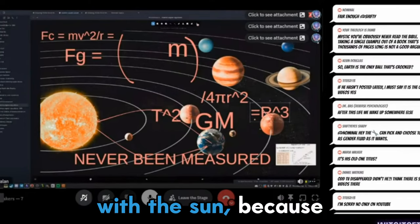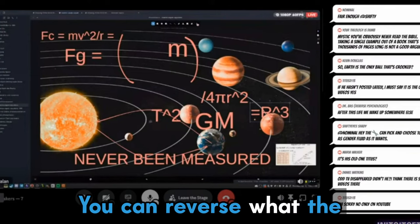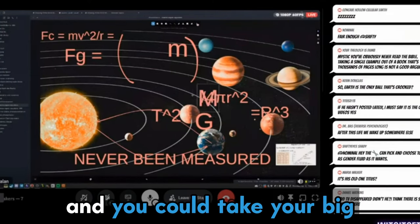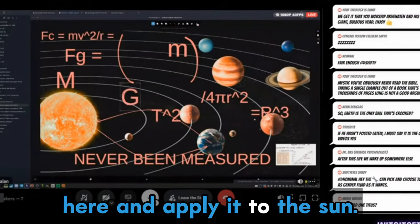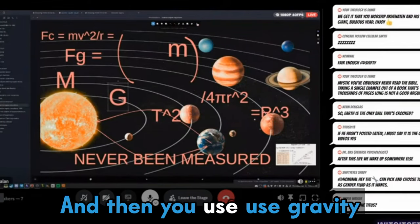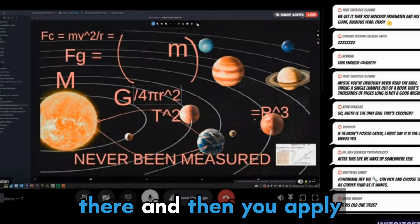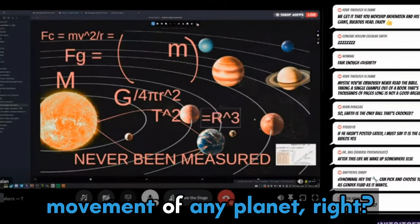And then they just applied the same thing to everything else. So once they had it with the sun, because it's algebra, right, you can reverse what the mass of the sun would be. And you could take your big M here and apply it to the sun. And then you use gravity there.